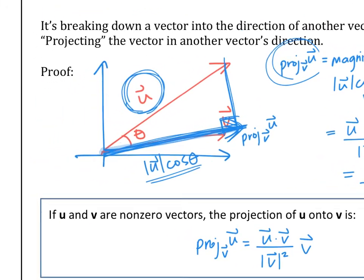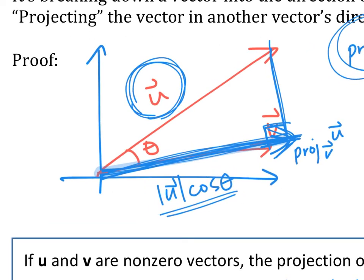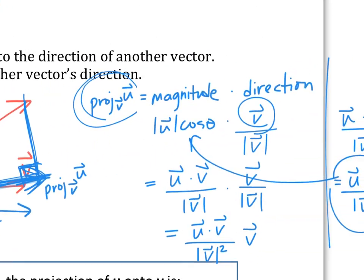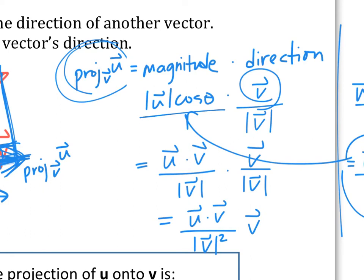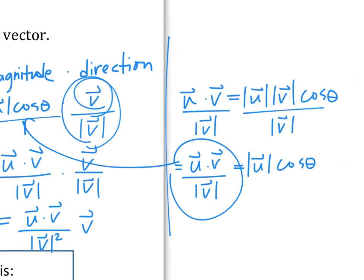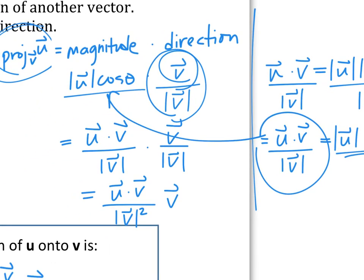Let me try one more time. The projection vector is one vector going in the other vector's direction. First you have two vectors, then you draw a perpendicular line down to where you're going. The amount in that direction gives the magnitude — that's magnitude of u cosine theta. Every vector needs magnitude and direction; the direction has to be in the v direction but only one unit long. You use the dot product to eliminate the angle and substitute in to get the final projected vector.